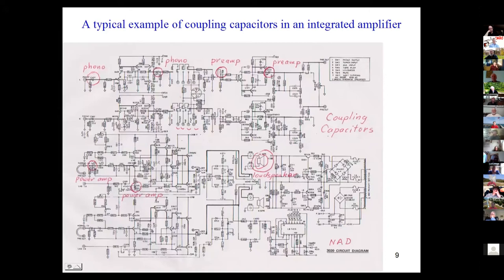Here's a typical schematic example. The phonopreamp has two coupling capacitors. Looking at other inputs, there's one at the input, one at the output. That one sits in a feedback loop, so its frequency is quite low because of the feedback, but it still gives some phase shift.